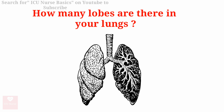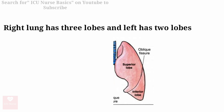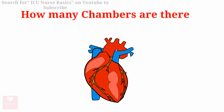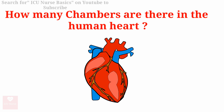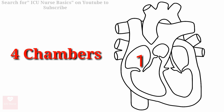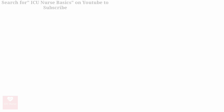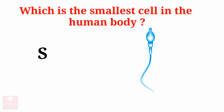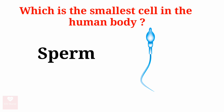How many lobes are there in your lungs? The right lung has three lobes whereas the left lung has two lobes, making a total of five lobes. How many chambers are there in the human heart? The human heart has four chambers. Which is the smallest cell in the human body? The sperm is the smallest cell in the human body.